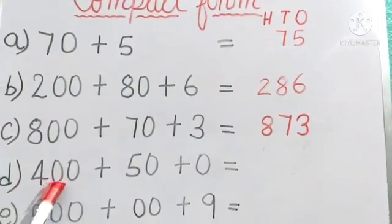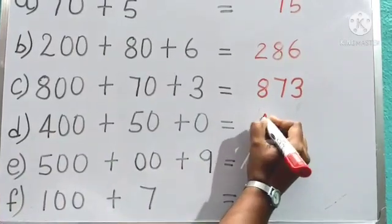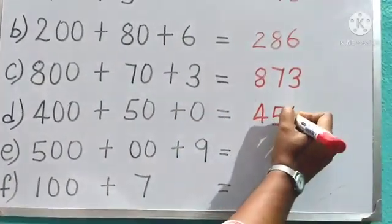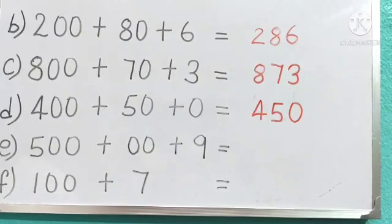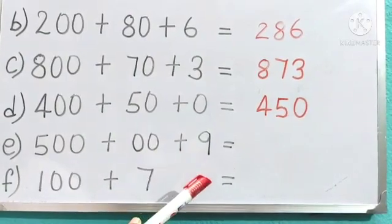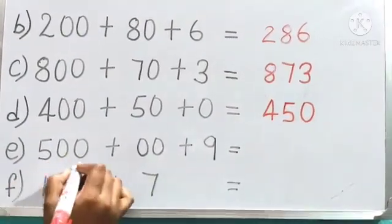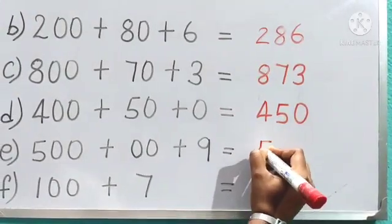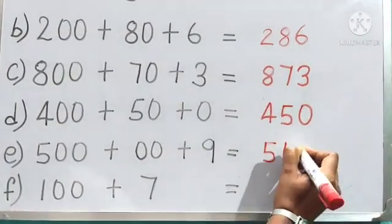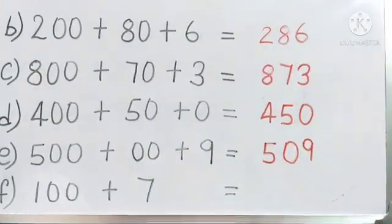Question D: 400 plus 50 plus 0. 4 is in the hundreds place. 50 means 5 tens in the tens place. And 0 is in the ones place, so we write 0. The number is 450. Question E: 500 plus 00 (or 10) plus 9. 500 means 5 is in the hundreds place. If 10 or 00 is given after the hundreds, we take it in the tens place. And 9 is in the ones place. So the number is 509.